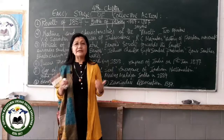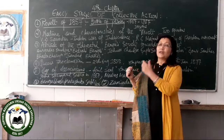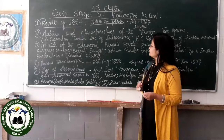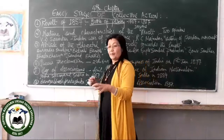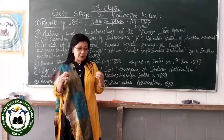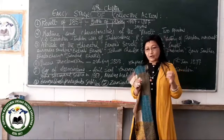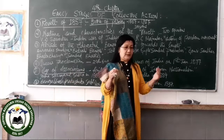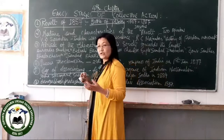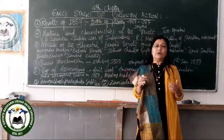R.C. Majumdar argues that at that time the feeling of nationalism had not yet developed among the people of India — people did not know what nationalism was — and that is why he does not call it a national revolt. However, historian Subhash Sen says it was a national revolt, because although it started with the sepoys, common people also joined. In northern India, common people took up traditional weapons like bows, arrows, sickles, and axes and revolted against the British. British residences, courts, institutions, and factories were the targets of their attacks.